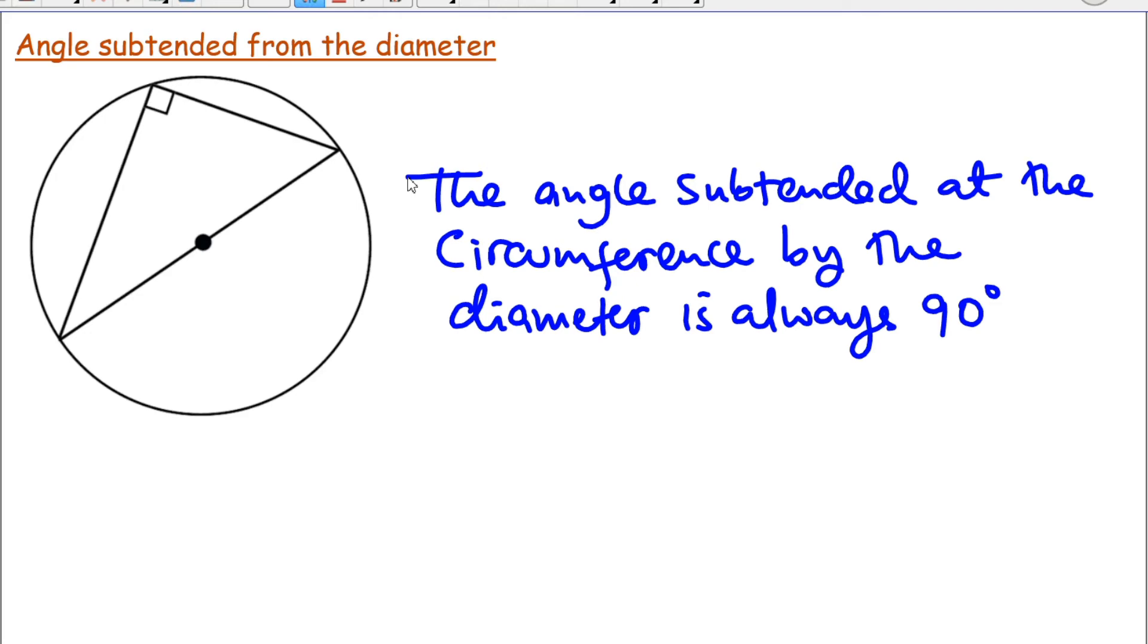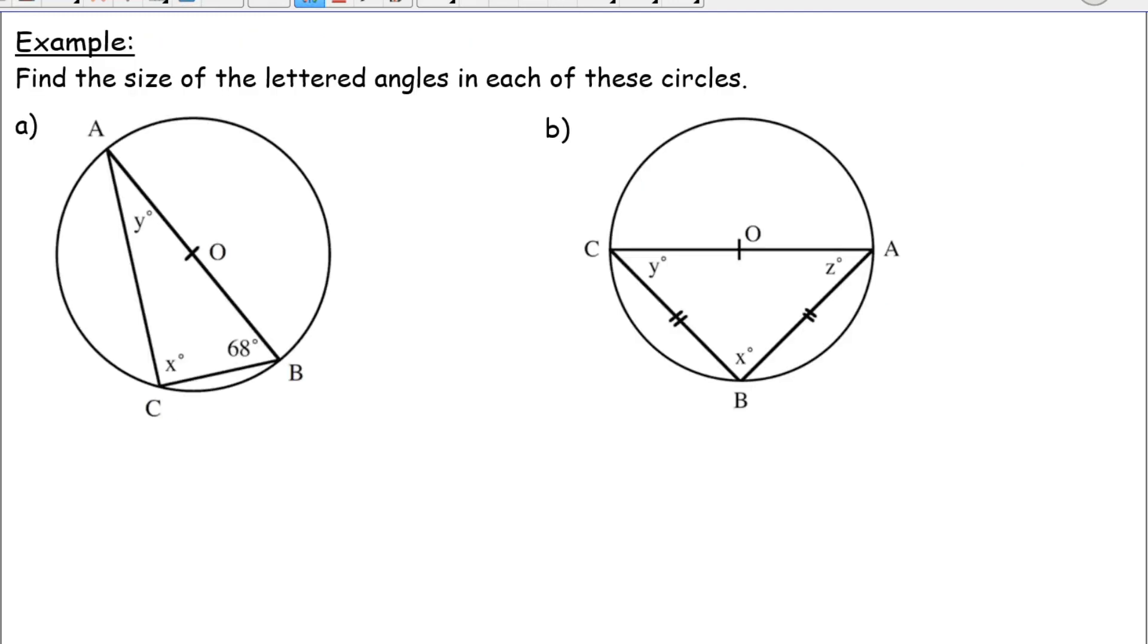The angle subtended at the circumference by the diameter is always 90 degrees. Now, we can apply this theorem to work out a few questions.